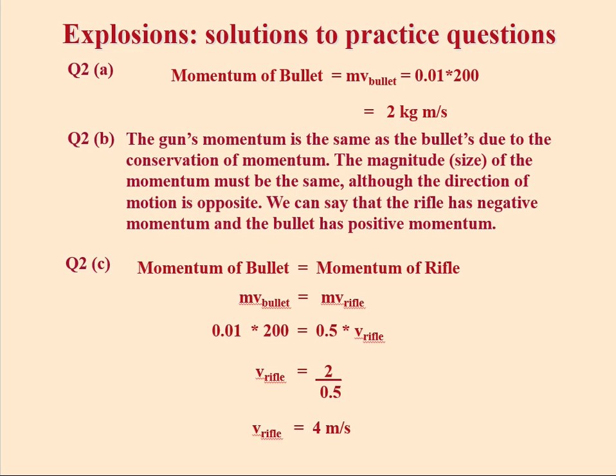A bullet of mass 0.01 kilograms is fired from a gun at 200 meters per second. The gun itself has a mass of 0.5 kilograms. Question 2a asks to calculate the momentum of the bullet.